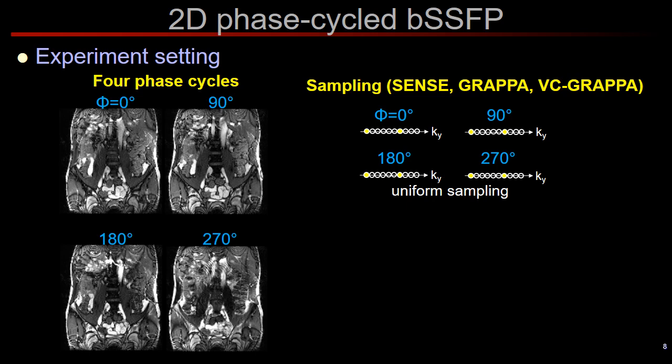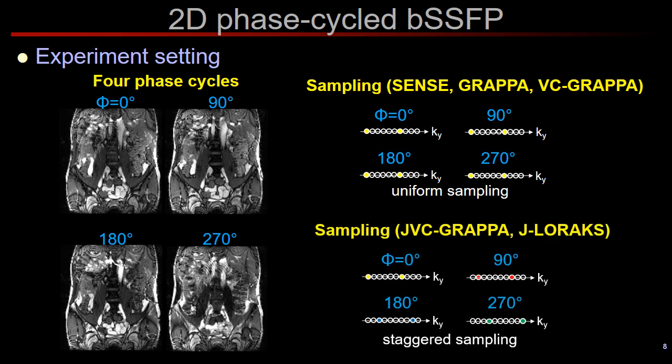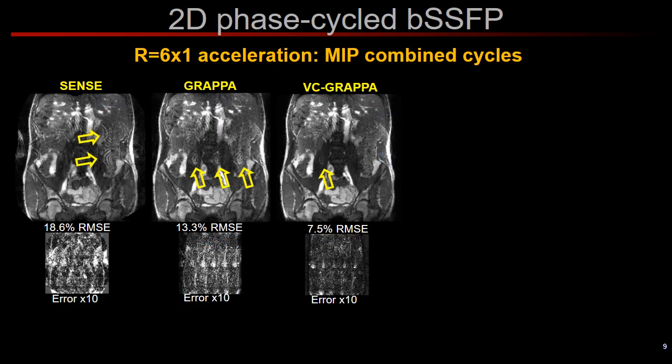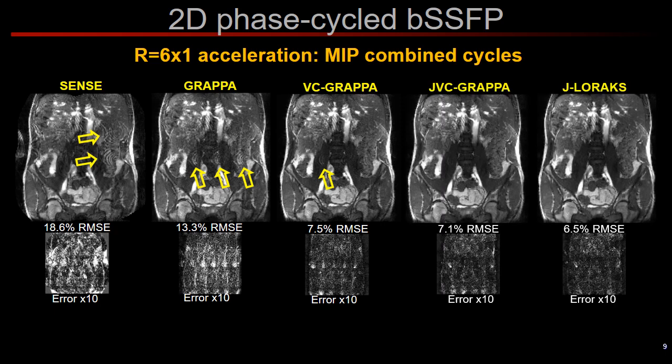Looking at some examples, let's begin with a 2D balanced SSFP acquisition using four different phase cycles. Conventional techniques such as SENSE, GRAPPA, or VC-GRAPPA reconstruct each phase cycle independently using the same sampling pattern. In JVC-GRAPPA and J-LORAX, we instead use staggered sampling and shift the acquisition pattern in each contrast. At 6-fold undersampling in the left-right direction, conventional SENSE and GRAPPA break down, virtual coil GRAPPA provides a much improved solution with some aliasing artifacts, and JVC-GRAPPA and J-LORAX further mitigate these artifacts and improve RMSE performance.